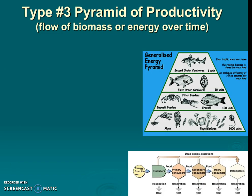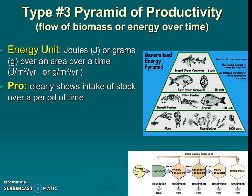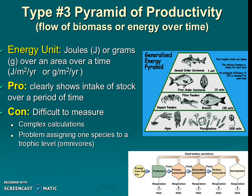Last but not least is the pyramid of productivity — the flow of biomass or energy over time. Notice this isn't standing crop; it's about flow. The unit is usually joules or calories per area over a particular time. A pro is that it accounts for seasonal changes. A con is that it's difficult to measure, involves complex calculations, and it's hard to assign one species to a particular trophic level — for example, humans are omnivores and eat lots of different things.